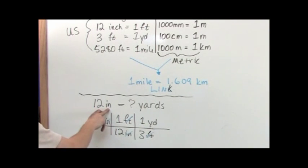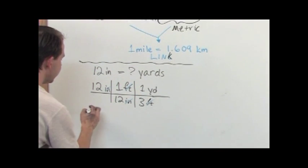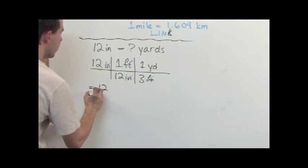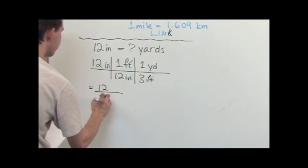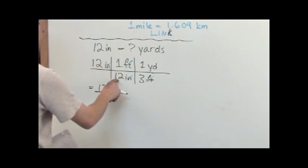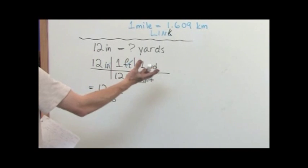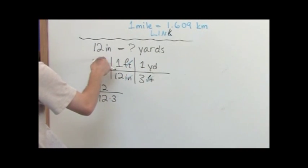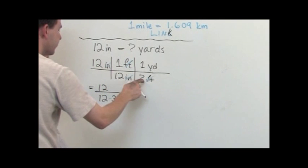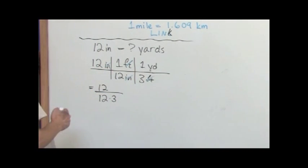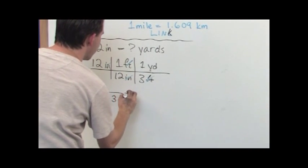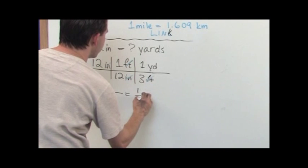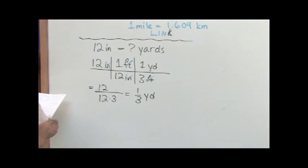Now I have to do the math. What this is going to be is 12 on the top divided by 12 times 3 on the bottom. 12 times 3 on the bottom. Anything on the bottom is going to be multiplied together. This is just like one giant fraction. Anything up here, this is 12 times 1 times 1 on the top. This is 12 times 3 on the bottom. So it's 12 on the top divided by this stuff on the bottom. The 12s are going to cancel. And so all you're going to have in the end is one third of a yard.